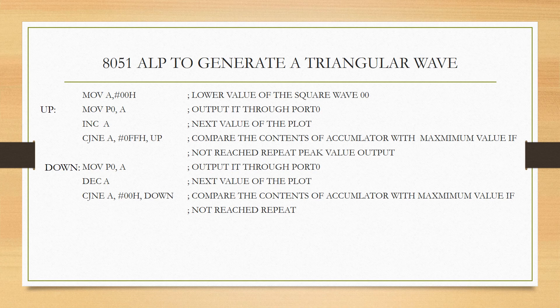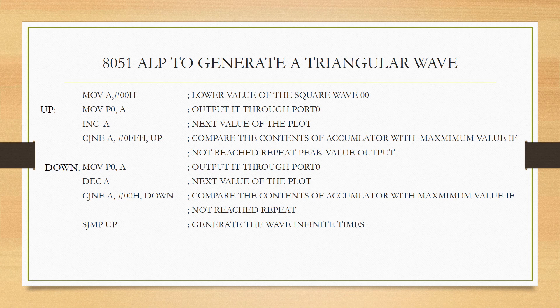Once the accumulator content becomes 01, then in the next decrement the content of the accumulator will become 0. Once it becomes 0, I am going to jump to the label UP. This means I have just completed generation of one positive peak and one negative peak, plotting all the values using Port 0. This process is continued infinite times to generate a continuous triangular wave. Finally, I am going to terminate the code using END, which indicates this is the end of this particular program.